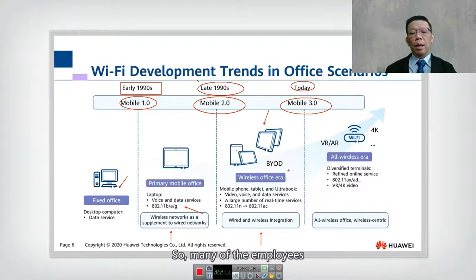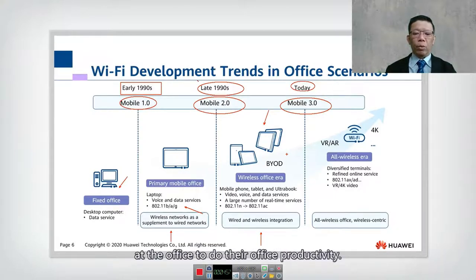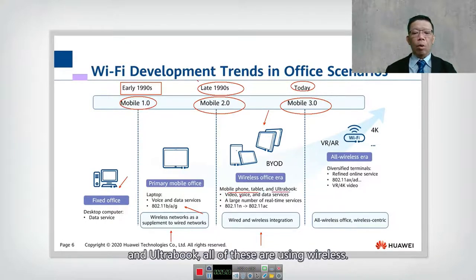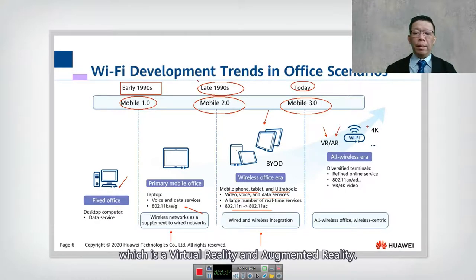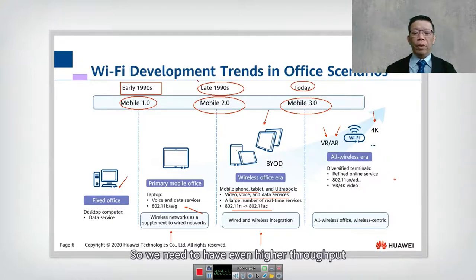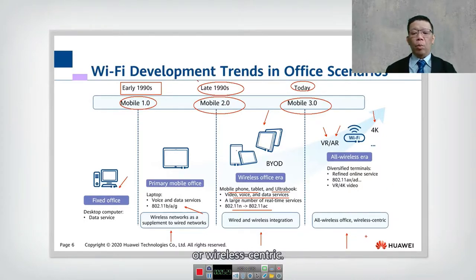Today we have BYOD — bring your own device — where employees use their own mobile phones, tablets, and ultrabooks wirelessly for office productivity, using standards from 802.11n to 802.11ac. Moving forward, with VR, AR, and 4K video streaming over wireless, we need even higher throughput and more reliable wireless, making wireless the central focus of the modern office.